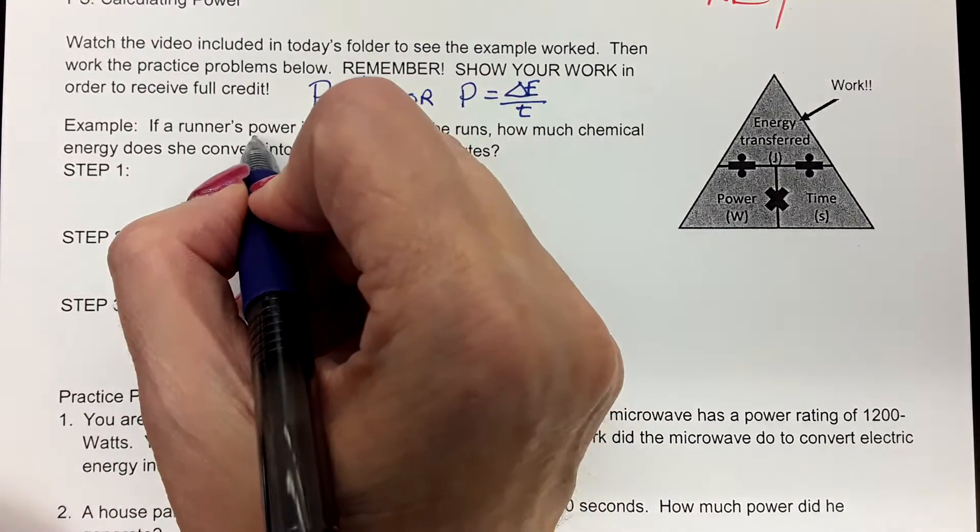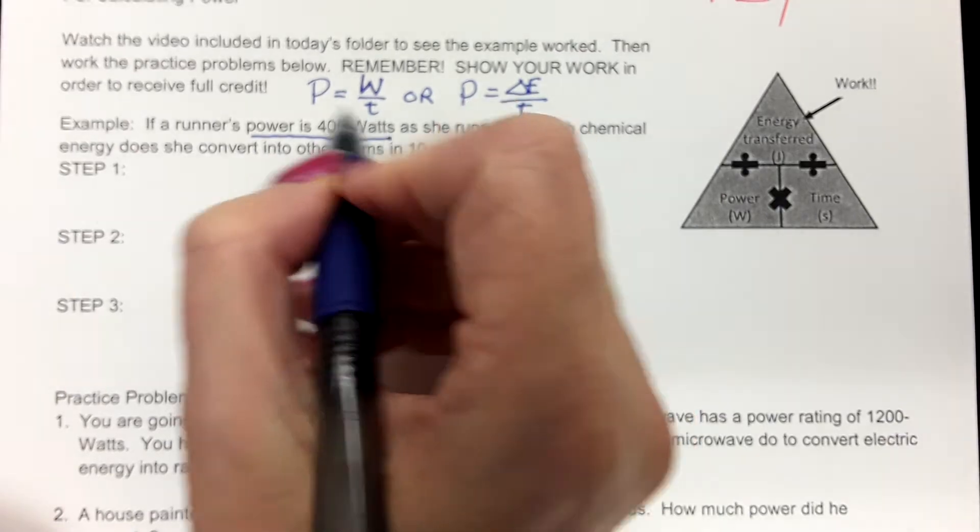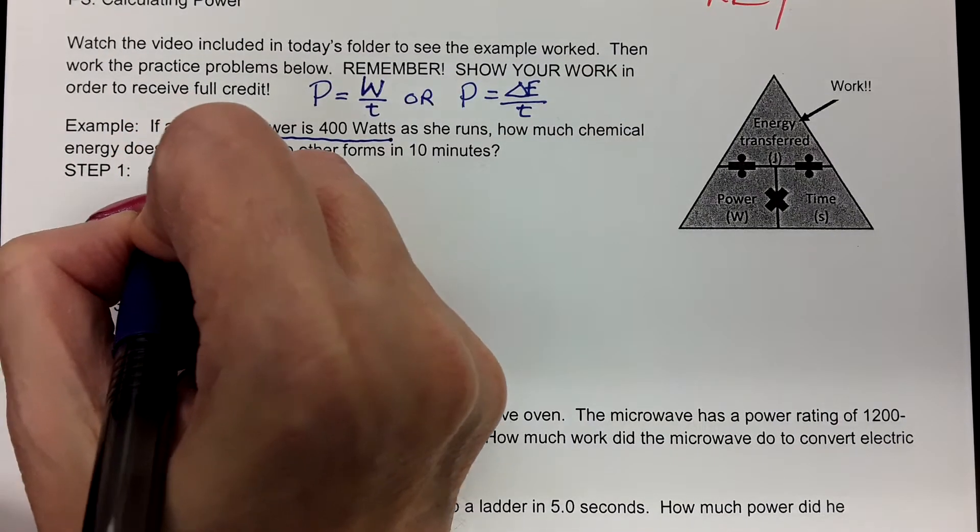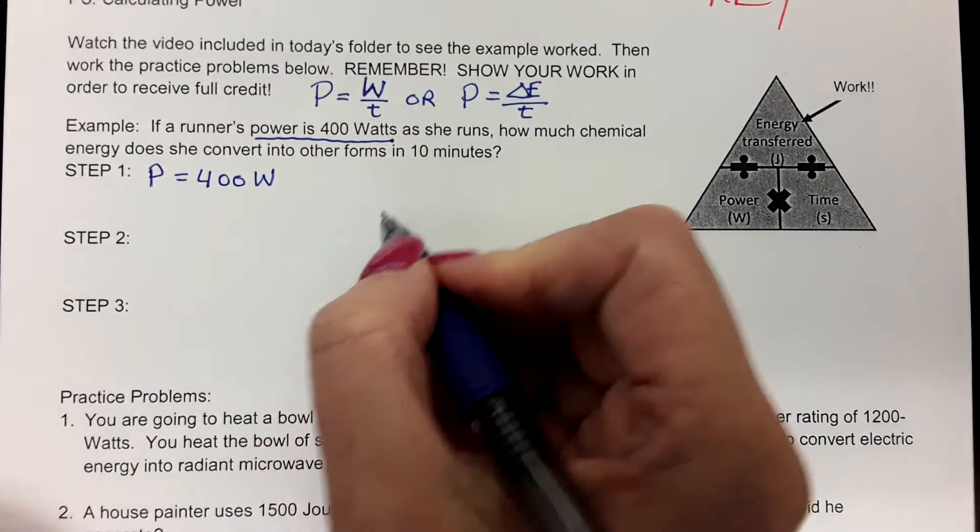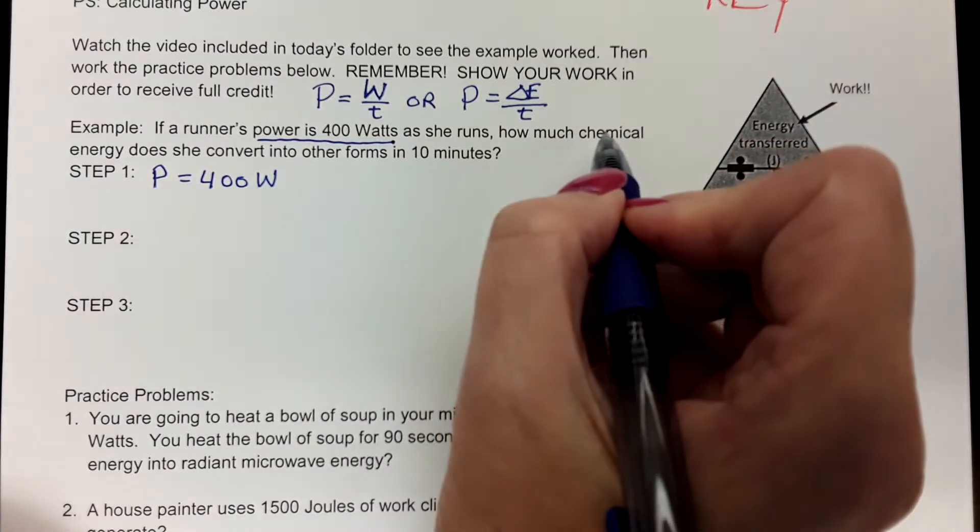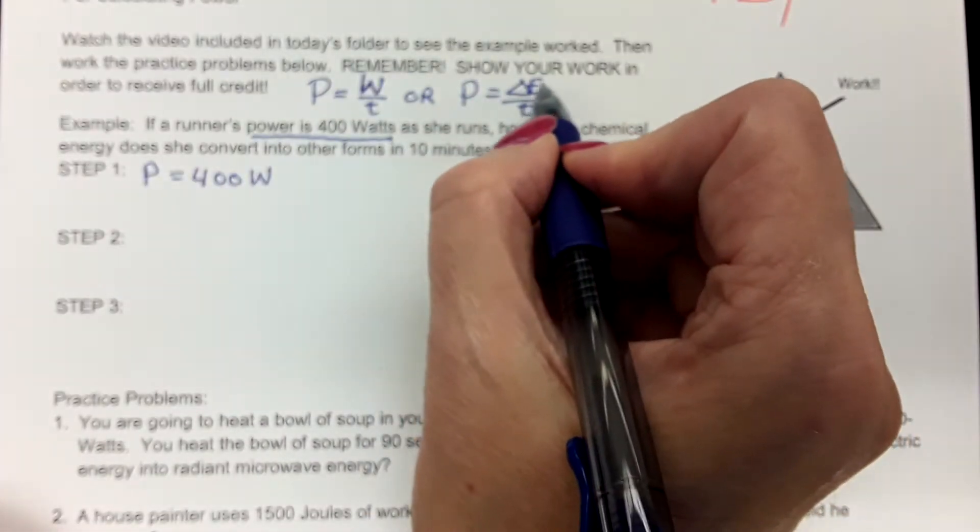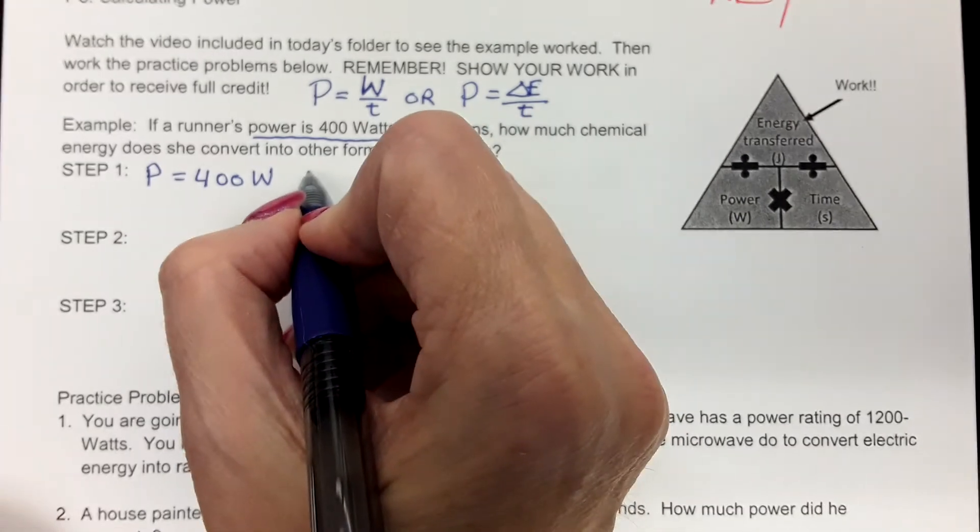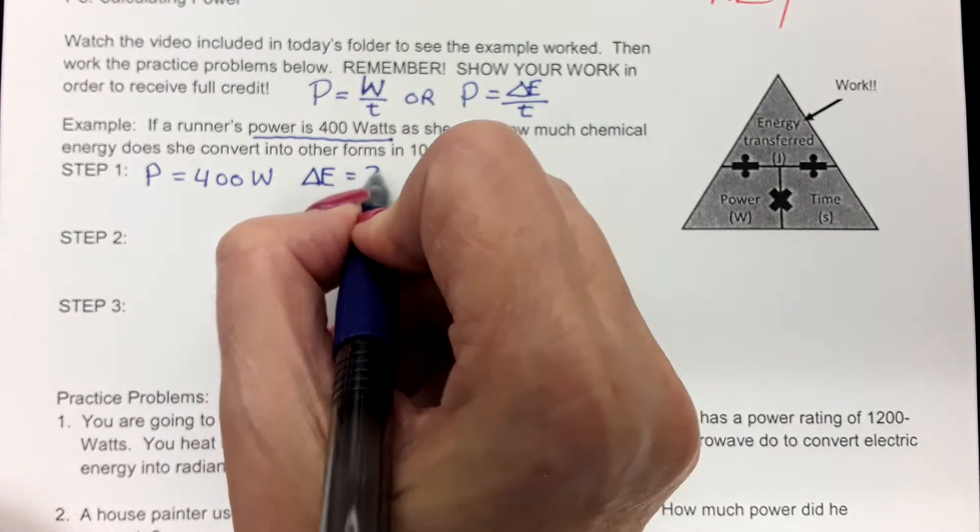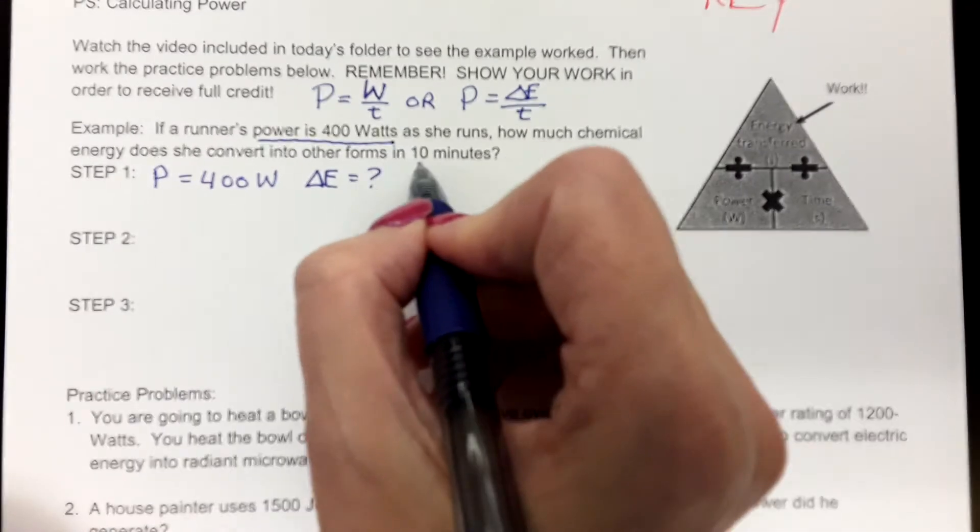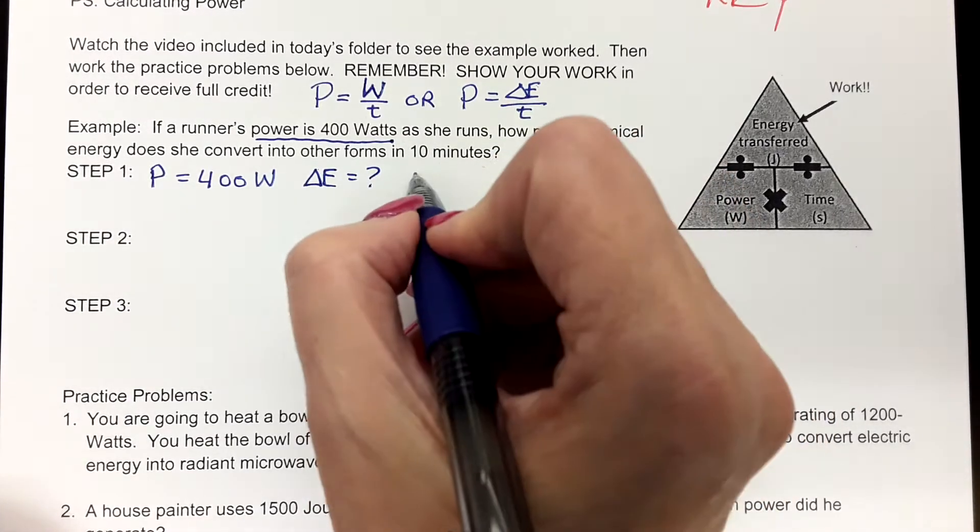So let's look at this example right here. It says, if a runner's power is 400 watts as she runs. So we know the power she's generating is 400 watts. It says, how much chemical energy does she convert into other forms? So here it is. This is the change in energy. That's what they want us to find is the change in energy. And then it says, in 10 minutes. So that's the time that she runs.